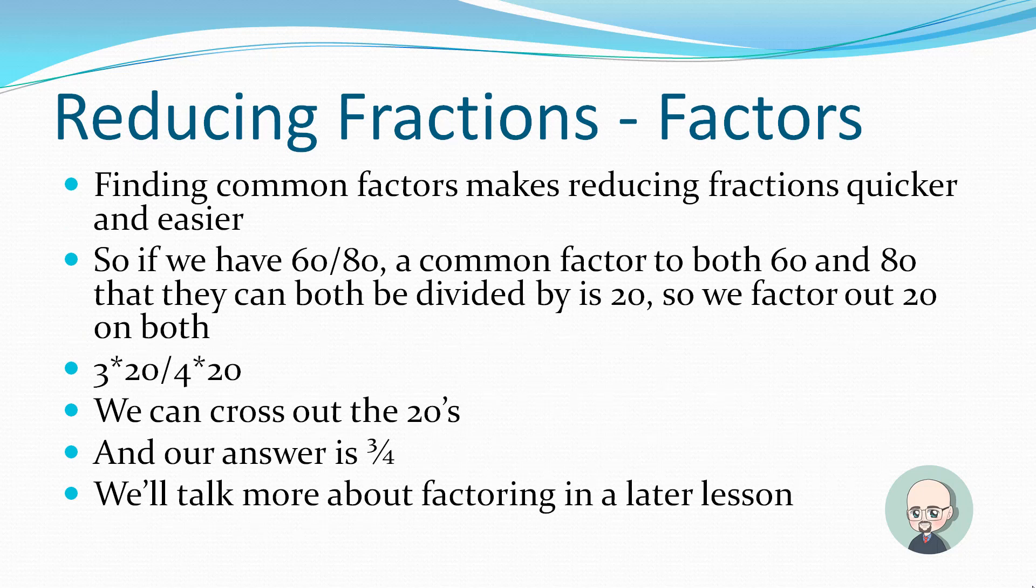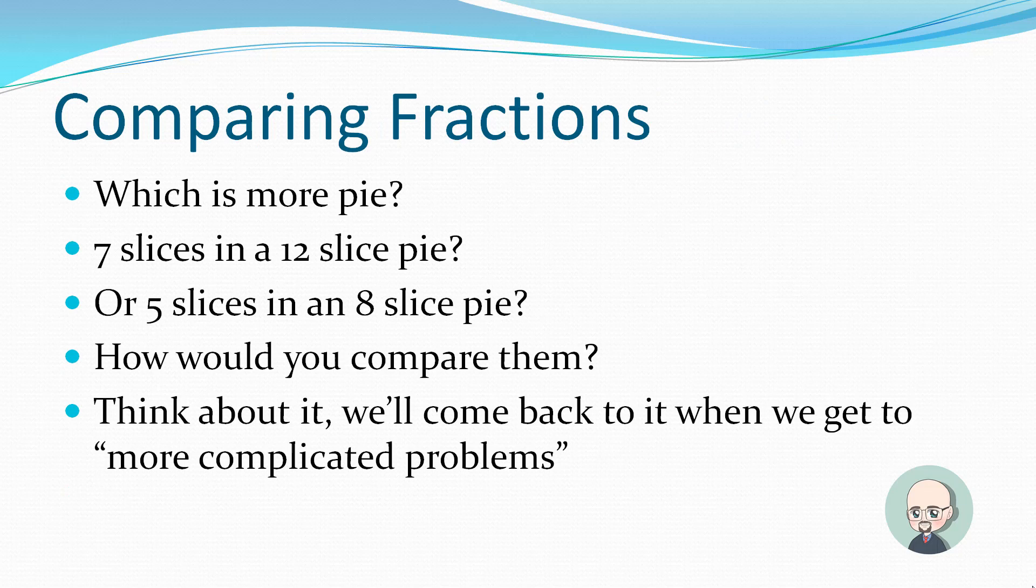Reducing fractions. Factors. Finding common factors makes reducing fractions quicker and easier. So if we have 60 out of 80, a common factor to both 60 and 80 that they can both be divided by is 20. So we factor out 20 on both. And you'll see below I wrote 3 times 20 over 4 times 20. And since they both have that 20 in them, we can cross out the 20 and our answer is 3 quarters. We just reduced 60 over 80 to 3 quarters. We're going to talk more about factoring a little bit in a later lesson, but I want to introduce it now so you have an idea of what I'm talking about later.